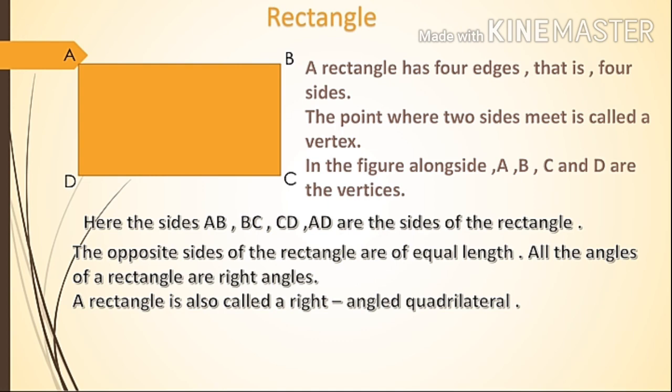The opposite sides of the rectangle are of equal length. Opposite means virudh. The opposite sides of the rectangle, the sides that are opposite to each other, have equal length.